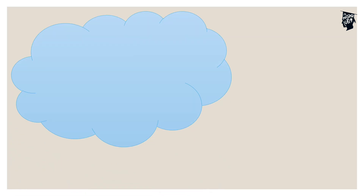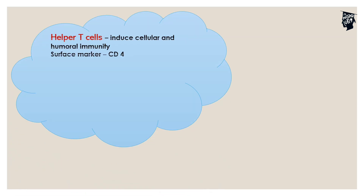Next one is helper T-cells. Helper T-cells induce cellular and humoral immunity. Cytotoxic T-cells carry the CD8 surface marker, while helper T-cells carry the CD4 surface marker.